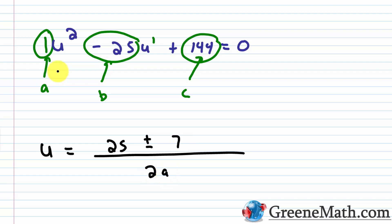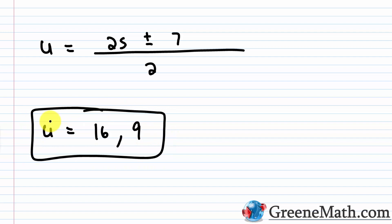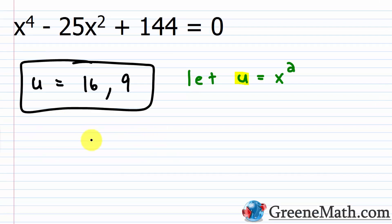So u equals (25 + 7)/2 = 32/2 = 16, or u equals (25 - 7)/2 = 18/2 = 9. A lot of students stop here thinking they're done — but the original equation was in terms of x, not u. You have to go back and substitute again. Since u equals x squared, we set x squared equal to 16 or x squared equal to 9.